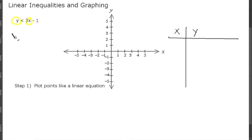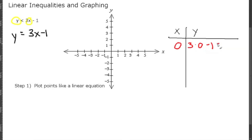So let's pretend that this says y equals 3x minus 1. Let's start with the point x equals 0. When x is 0, y is going to be 3 times 0 minus 1, which is negative 1, so we're at the point (0, -1). Now let's do one more point: when x equals 1, y is going to be 3 times 1 minus 1, which is 3 minus 1, which is 2. So now we're at the point (1, 2).